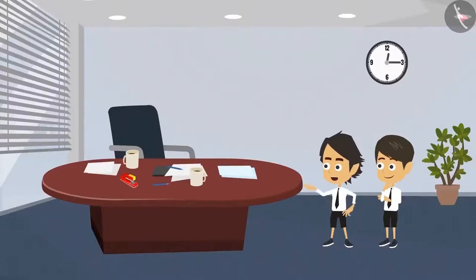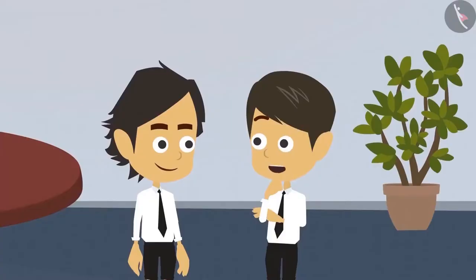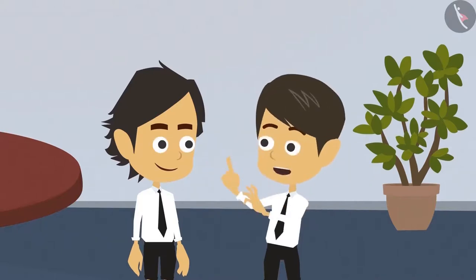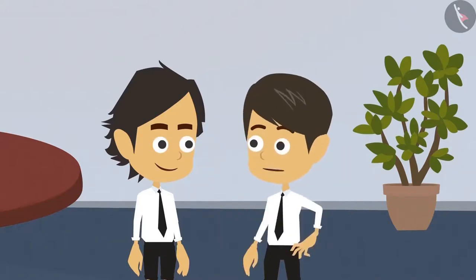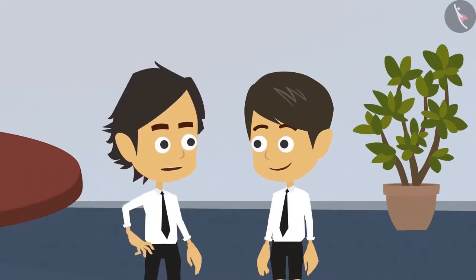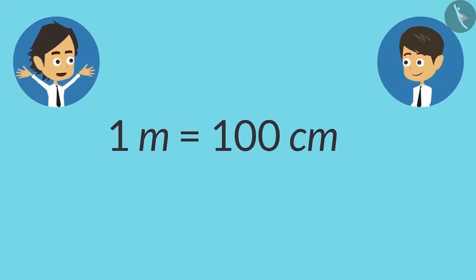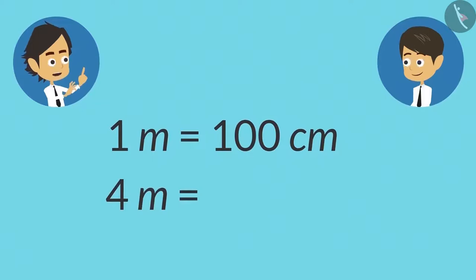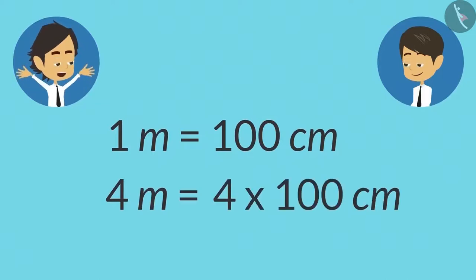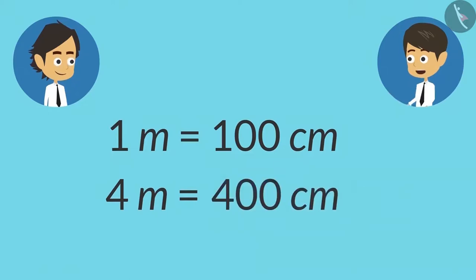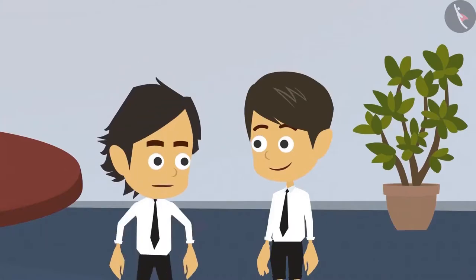There is one more question. We converted our height from centimeters to meters, but if we have to convert meters into centimeters, then what should we do? That is very easy. We are aware that 1 meter has 100 centimeters. So if an object is 4 meters long, to convert its length into centimeters we will multiply it by 100. Which means the length of a 4 meter object in centimeters would be 4 multiplied by 100, equals 400 centimeters. Yes, absolutely right.